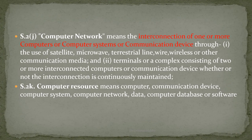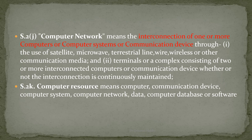We will now understand the definition of computer network defined in section 2(j). According to this section, computer network means the interconnection of one or more computers or computer systems or communication devices through the use of satellite, microwave, wire, wireless or other communication media, and the terminals or a complex consisting of two or more interconnected computers or communication devices, whether or not the interconnection is continuously maintained. This definition speaks only about computer network and not about computer or computer devices discussed previously.